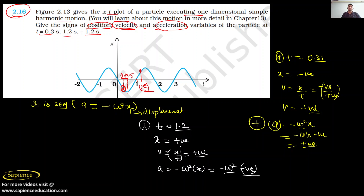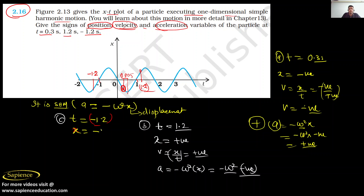Now let us consider case C, where time t = -1.2 seconds. If we locate -1.2 on the graph, we get that point. Here time is negative. From the graph, you can see that the position x is negative.